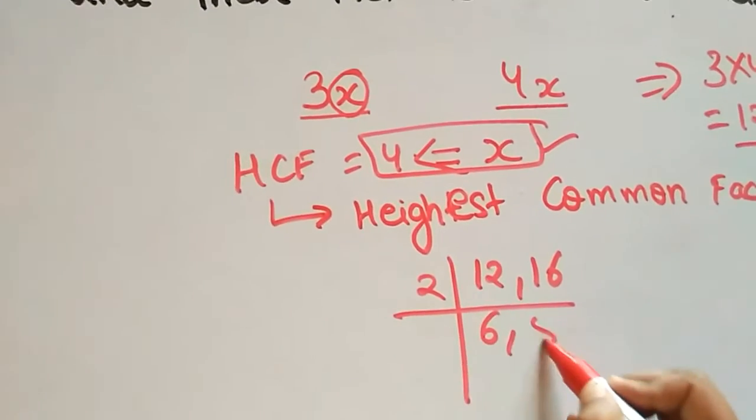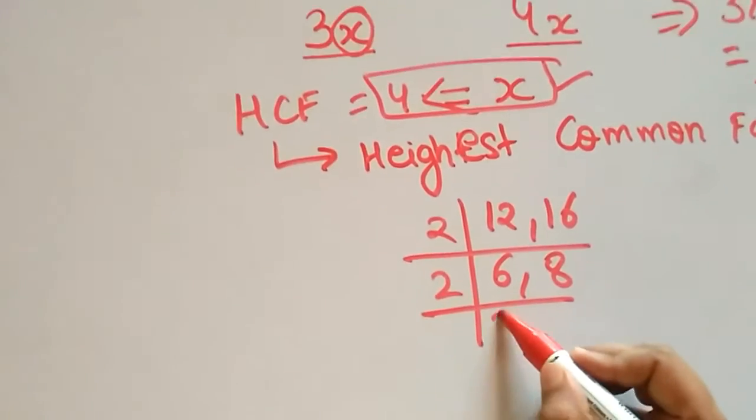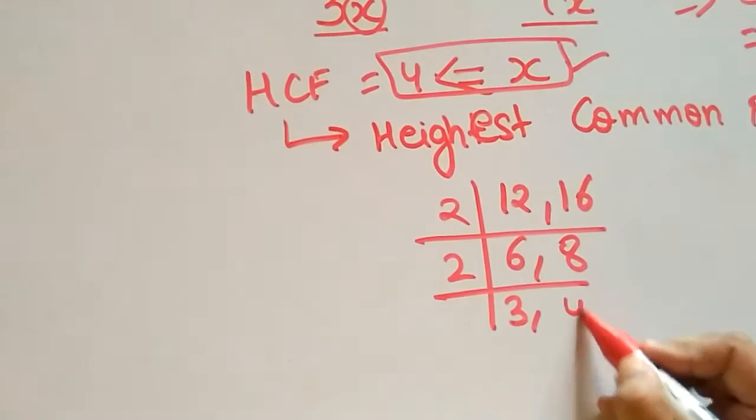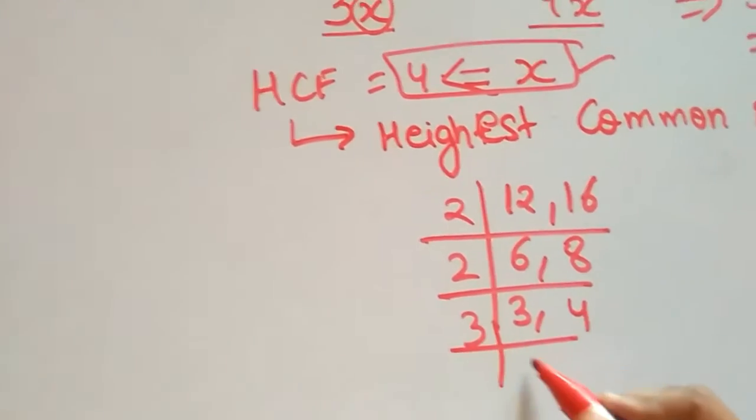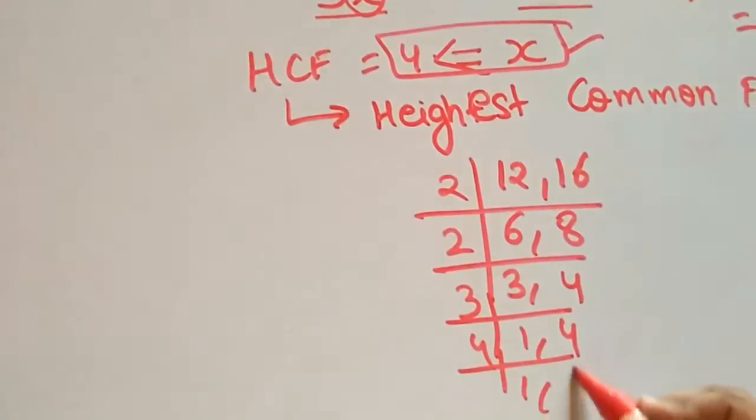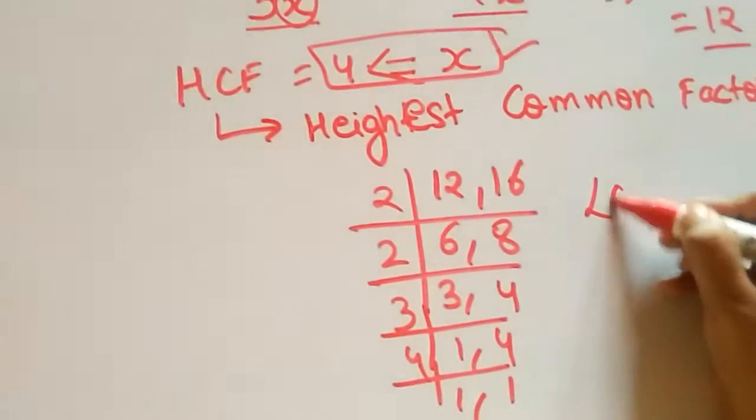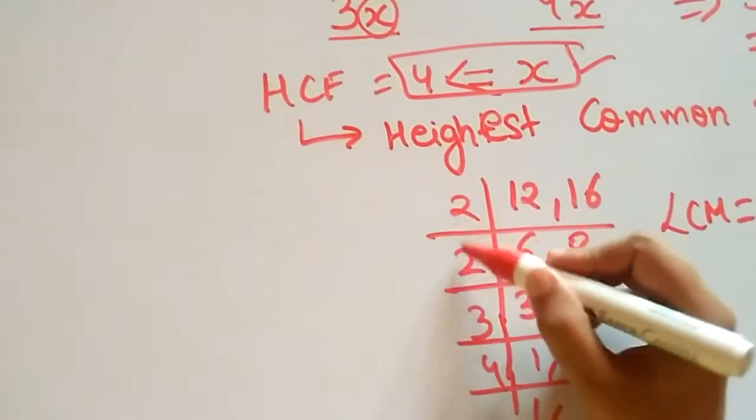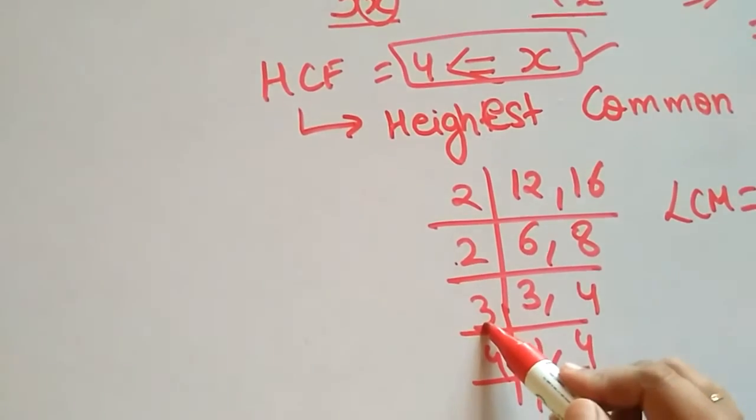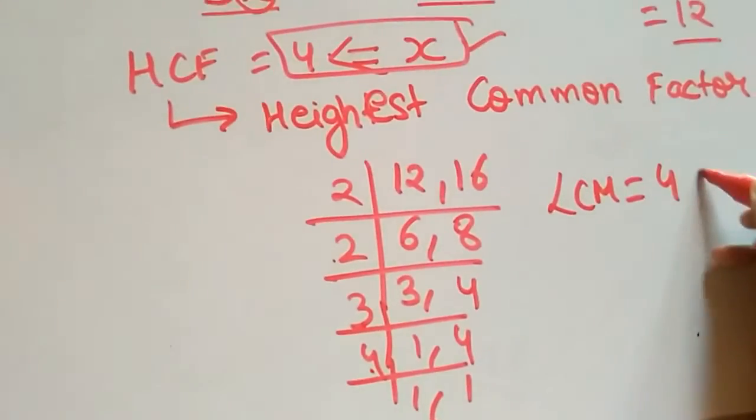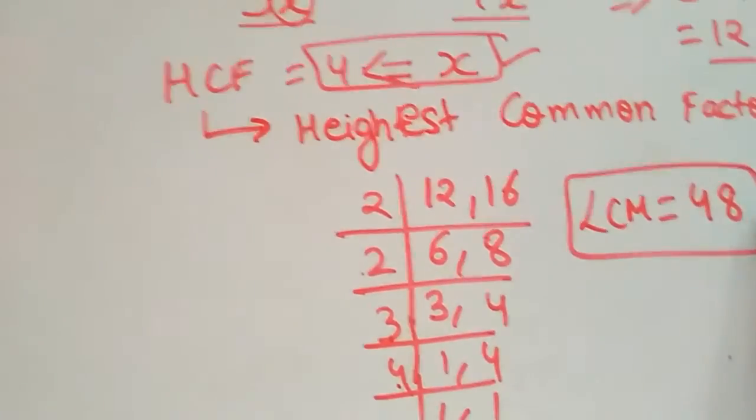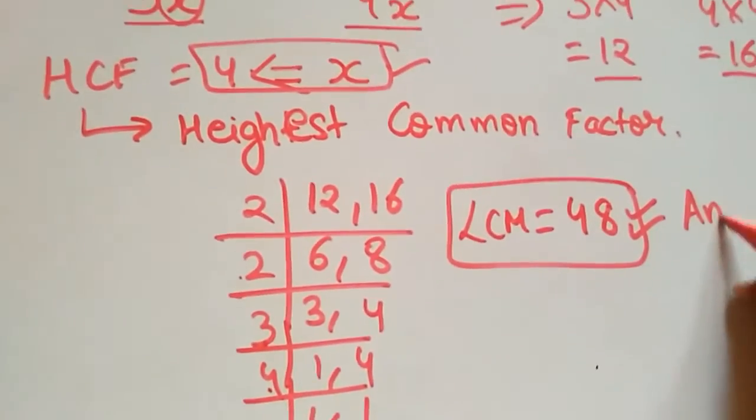Using the division method: 2 divides 12 to get 6, and 16 to get 8. 2 divides 6 to get 3, and 8 to get 4. We have 3 and 4 remaining. So the LCM is 2 times 2 is 4, times 3 is 12, times 4 is 48. This is your answer.